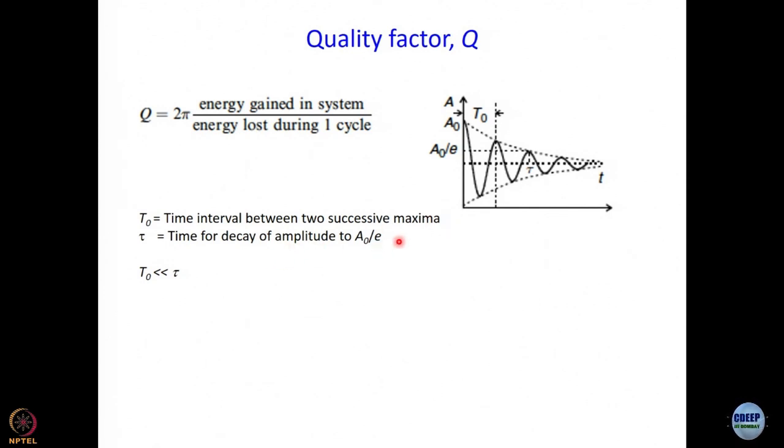And tau is time for decay of amplitude from A0 to A0 by e. Does that ring a bell? It is sort of something like lifetime, time constant. Now, generally T0 is actually much smaller than tau. Otherwise, you have a very bad laser. If it decays completely even before doing a cycle, then how will you work? This figure is just not to scale. It is drawn in such a way so that you can see all the quantities involved. But T0 is actually much smaller than tau and we are going to use it shortly.